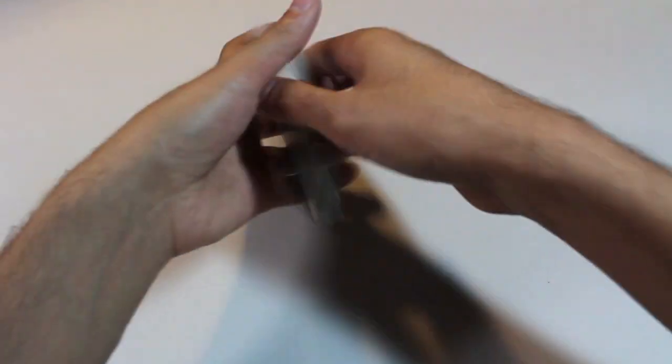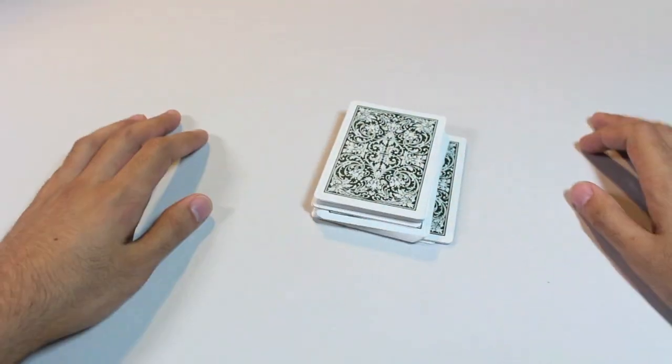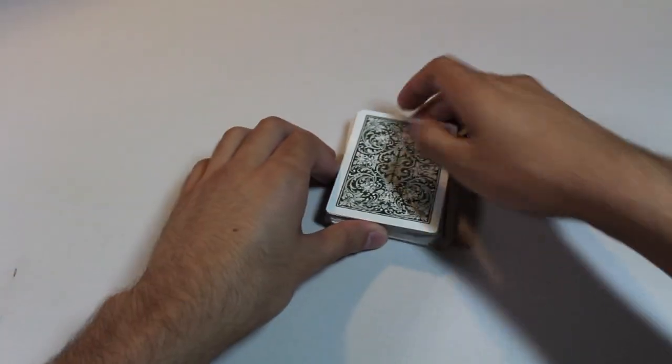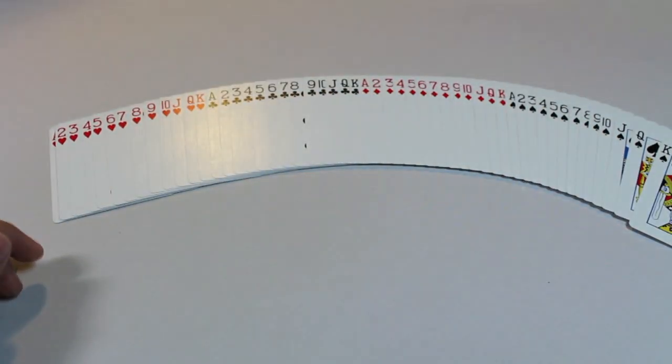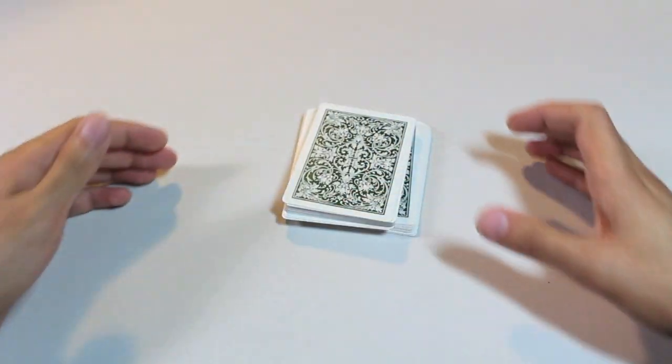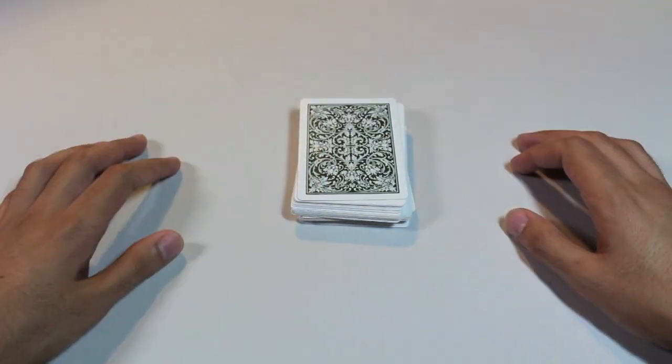So here's what it looks like. And of course the cards are still going to be in order. So as you can tell it's a really quick, really simple false cut and it looks really good. It gets the job done.